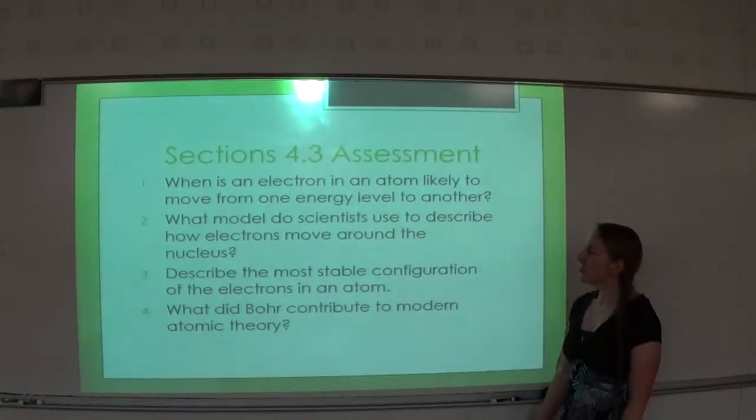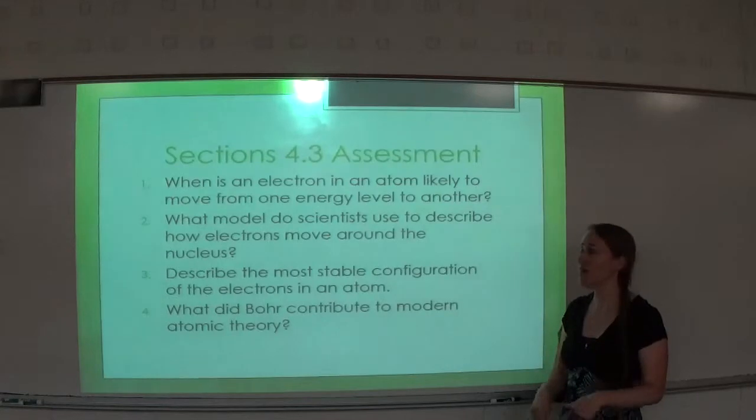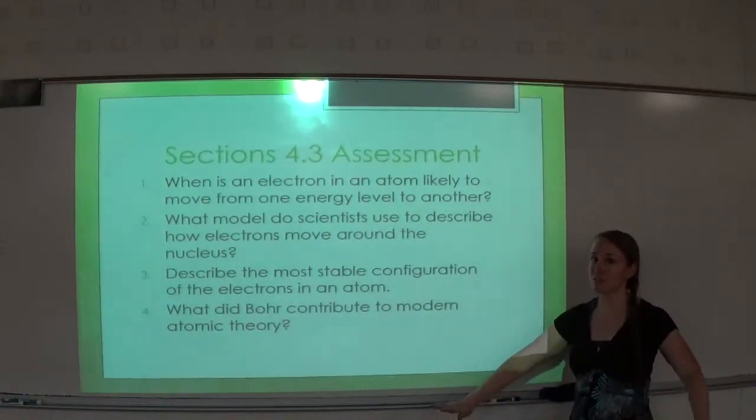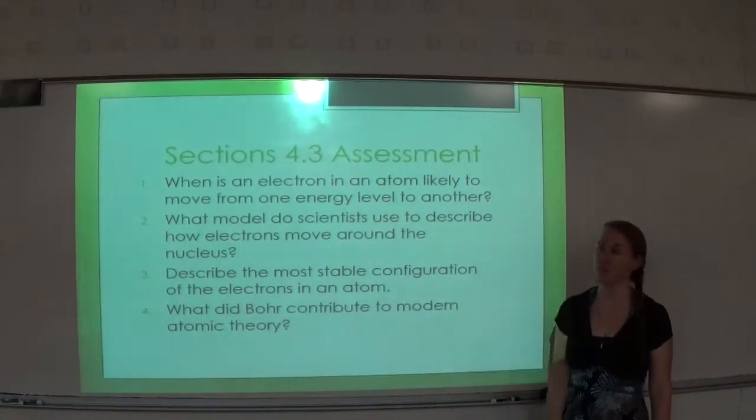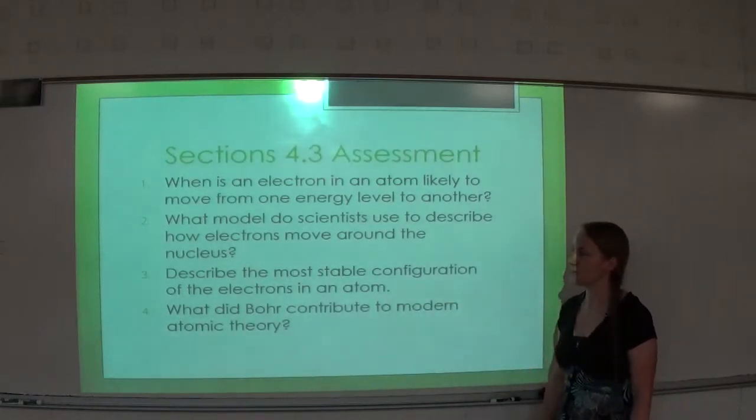Number three, describe the most stable configuration of electrons in the atom. Remember, excited is unstable. What goes up must come down. When are the electrons in their lowest level possible? Ground state. Or you can say the electrons are in the lowest energy level possible.